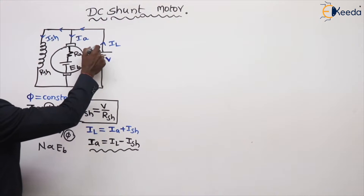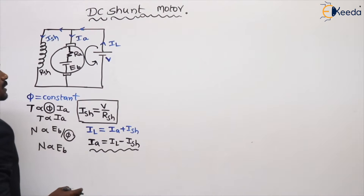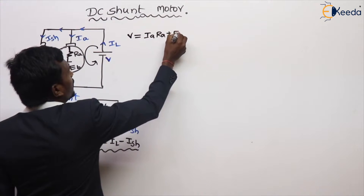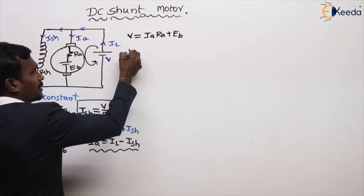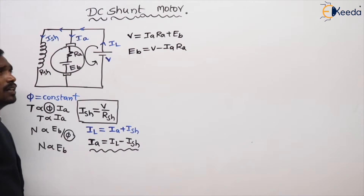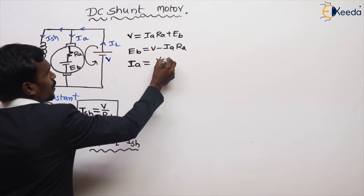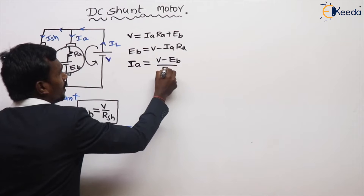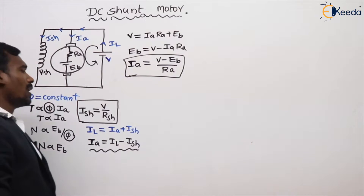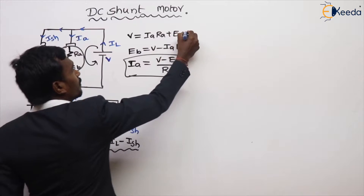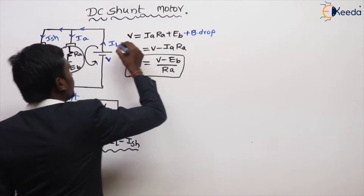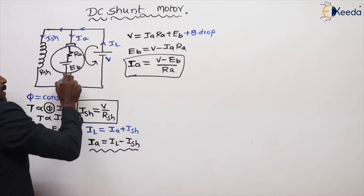The voltage equation: V equals IA·RA plus EB. From this, EB equals V minus IA·RA. And IA equals (V minus EB) divided by RA, where this IA is equal to IL minus ISH. Of course, there is also a brush voltage drop from the brushes that must be included.